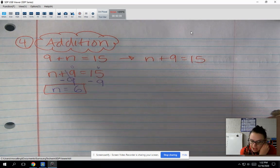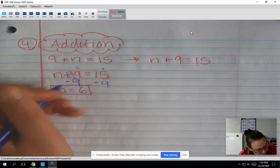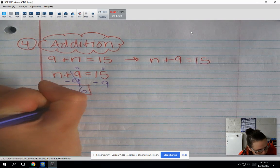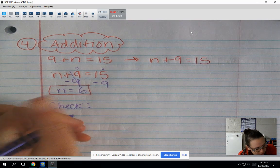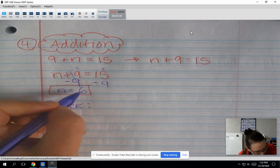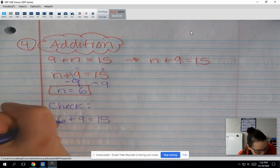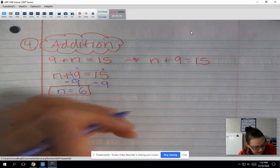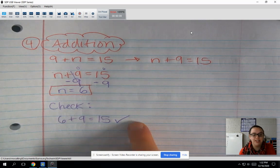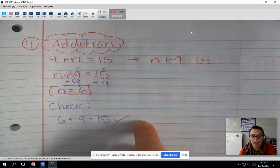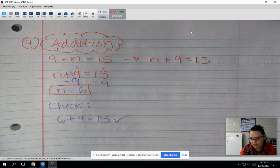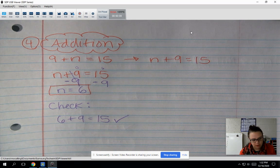Can't win them all. So then I need to do my check. So I'm going to plug in 6 for n. So 6 plus 9 equals 15. 6 plus 9. That does give me 15. If you are listening at this point, write the word correct next to there. Thank you very much.